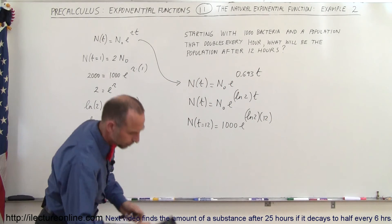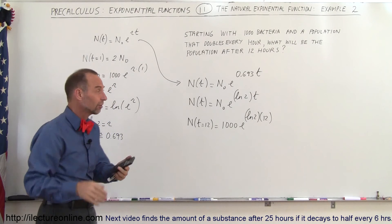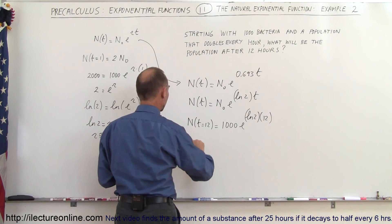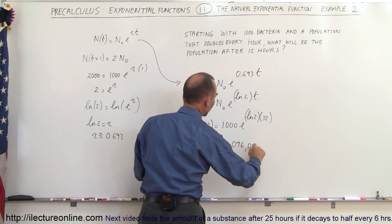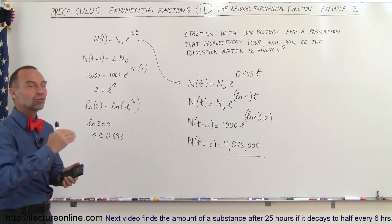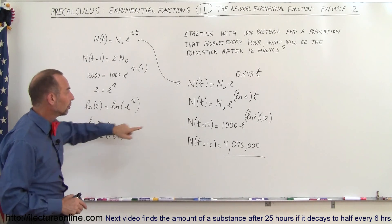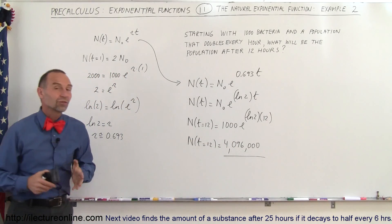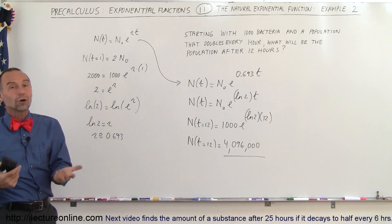With a calculator, we take the natural log of 2, multiply by 12 to get approximately 8.3178, then use the e-to-the-x button, and multiply by 1,000. The population of bacteria after 12 hours is 4,096,000 — the exact same result as in the previous video. So with the natural exponential function, we use the doubling information to find r, then plug in any value of t to get the total population N after that time has elapsed.